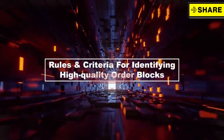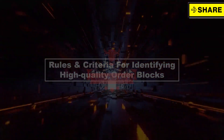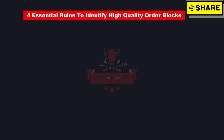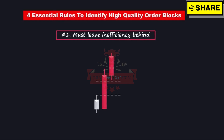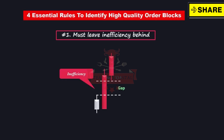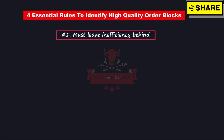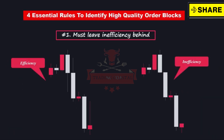Let's delve into the rules and criteria for identifying high-quality order blocks in the market. There are four essential rules. Rule number one states that a high-quality order block must leave a significant inefficiency behind. Inefficiency refers to an imbalance between buyers and sellers in the market, resulting in a disequilibrium that needs to be filled, often observed as a gap within the candles. If a three-candle sequence does not exhibit any gaps, it is considered efficient. If there is a gap present, it signifies an example of inefficiency.